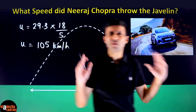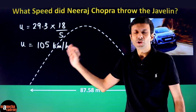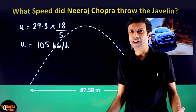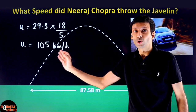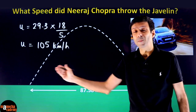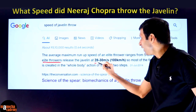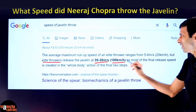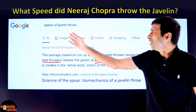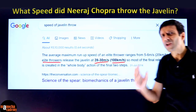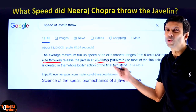Wasn't that simple? We just applied some physics and mathematics and estimated his speed. Some of you might be wondering if it's really possible to throw the javelin that fast and whether our estimate is correct. I encourage you to Google it. The Google result shows that elite throwers release the javelin at 28 to 30 meters per second, around 100 kilometers per hour. So our answer of 29.3 meters per second is pretty accurate — fairly close to the expected value, given all the assumptions we used.